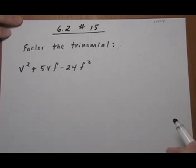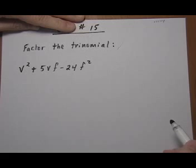6.2, number 15. Here we want to factor the trinomial v squared plus 5vf minus 24f squared.